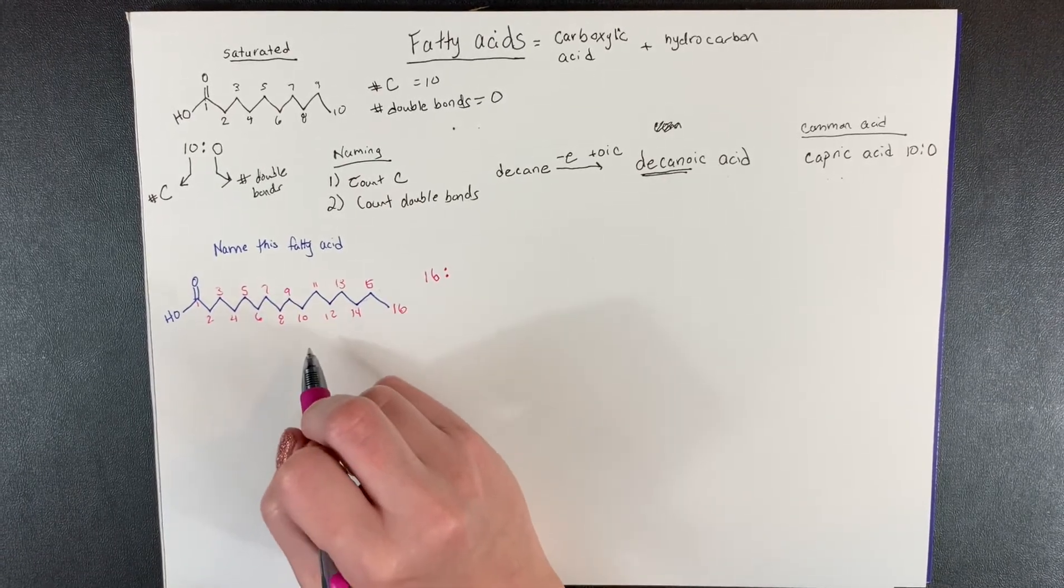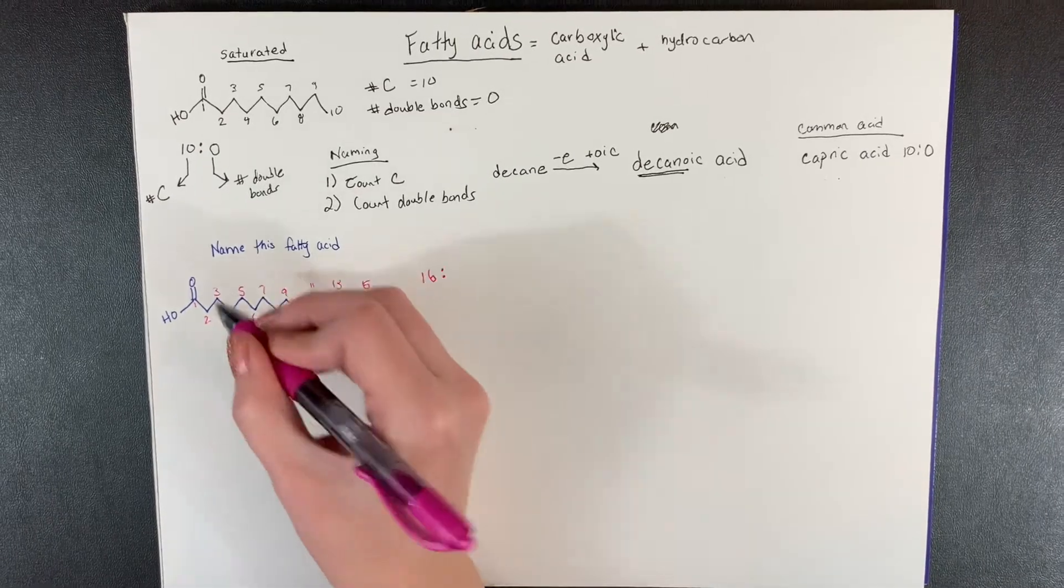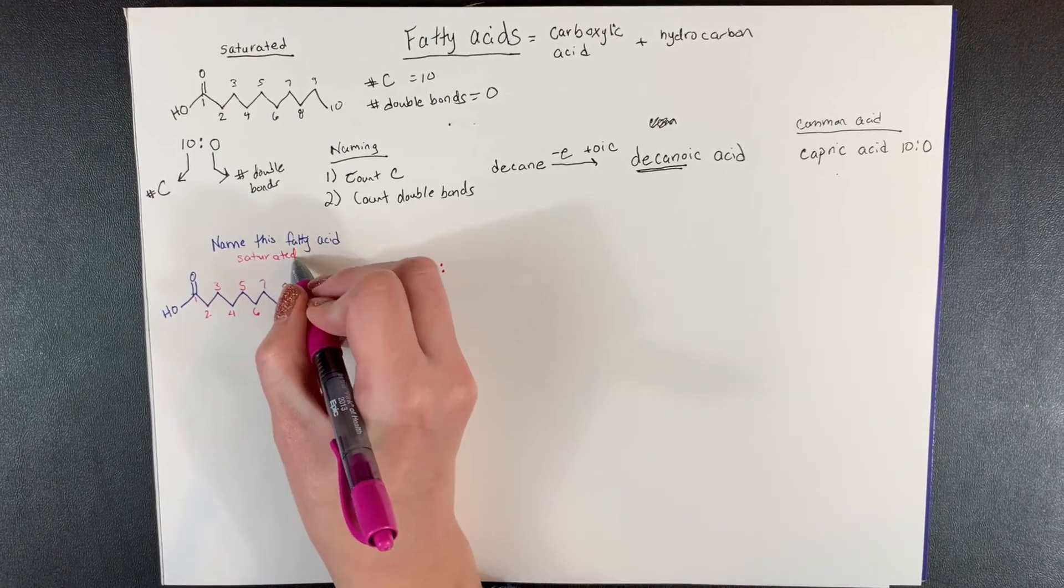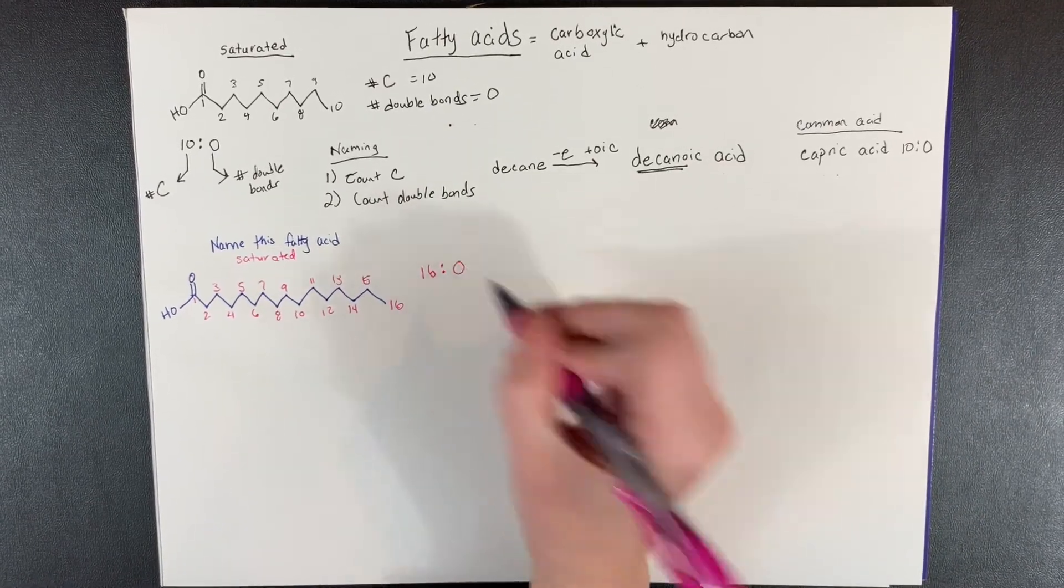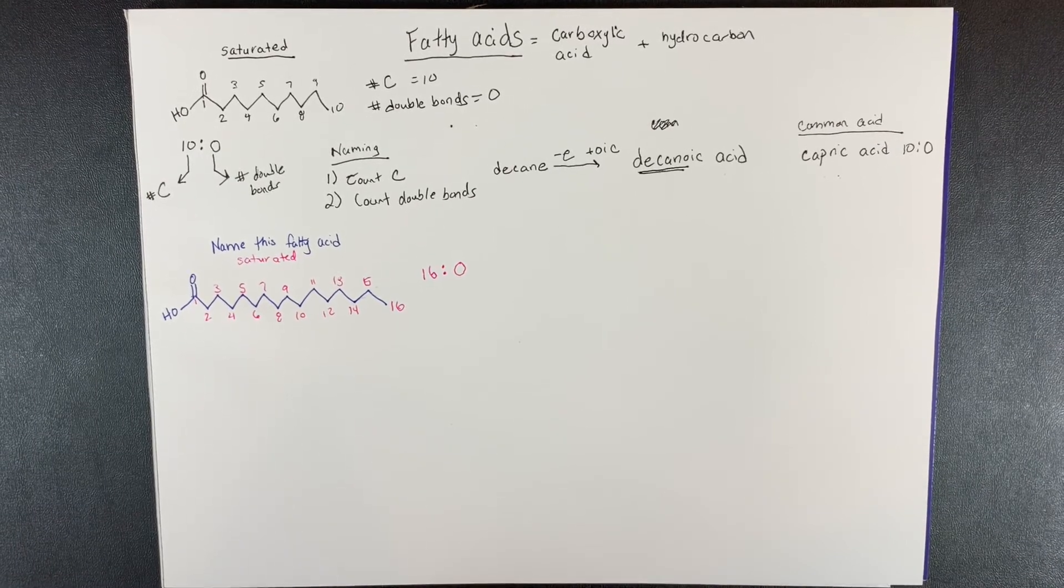If you look back at this example, I don't see any double bonds, which means this is also a saturated fatty acid. So we put the number zero after the colon, no double bonds.